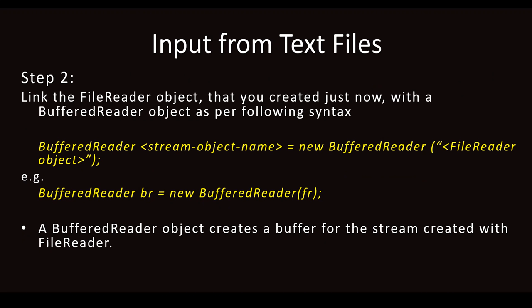Step 2: link the FileReader object you just created with a BufferedReader object as per the following syntax: BufferedReader stream_object_name = new BufferedReader(FileReader_object). This is the same as the previous video where you connected all the objects — here you connect the FileReader object into BufferedReader. The BufferedReader object creates a buffer for the stream, so whatever data you retrieve from the file will be stored temporarily in the buffer memory.